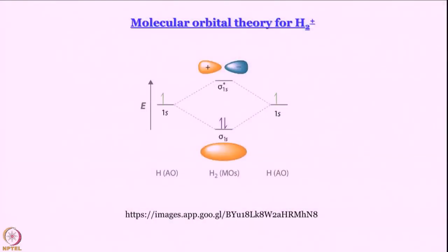Now, we are going to talk about molecular orbital theory for a very simple system, dihydrogen molecular cation H₂⁺. Why H₂⁺? Because it has one electron.